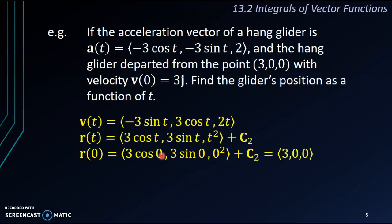So it means r(0) is the vector (3,0,0). So we'll take this expression equals to (3,0,0) and substitute the t with 0. So let's see. Cos 0, we get 1. 3 by 1, you get 3. Here you get 0. Here you get 0. So we have (3,0,0) plus C₂ equals to (3,0,0) here. And since this vector and this